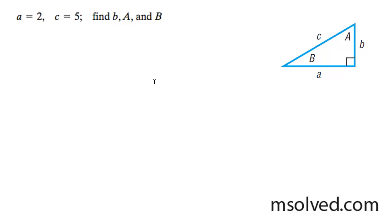Let's find the rest of this triangle. We know a equals 2, c equals 5, and we know this is 90 degrees.